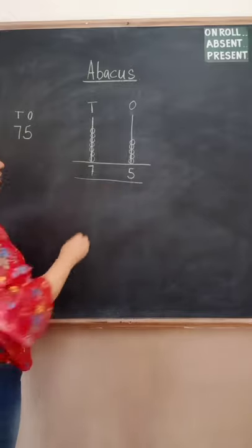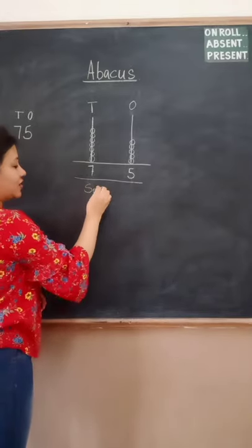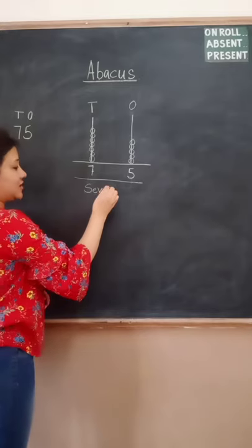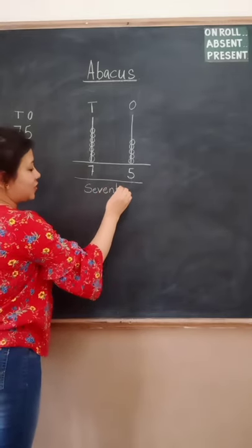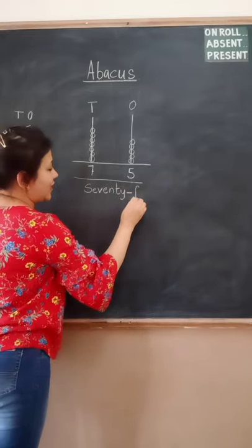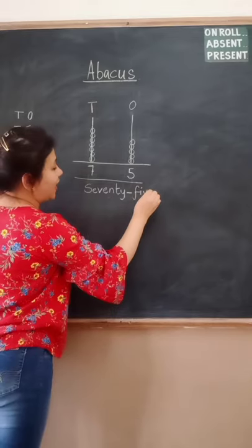And here you got your number and you will write the spelling of seventy-five. And here you will write the number. So the number: seventy, 70, five, 75.